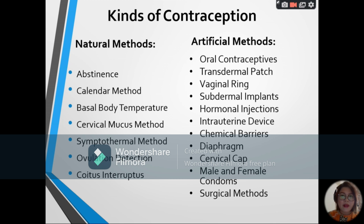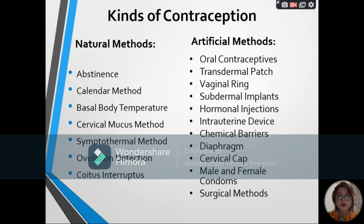We have two kinds of contraception: natural methods and artificial methods. Under natural methods, we have abstinence, calendar method, basal body temperature, cervical mucus method, symptothermal method, ovulation detection, and coitus interruptus. For artificial methods, we have oral contraceptives, transdermal patch, vaginal ring, subdermal implants, hormonal implants or hormonal injection, intrauterine device or IUD, chemical barriers, diaphragm, surgical cap, male and female condoms, and surgical methods.